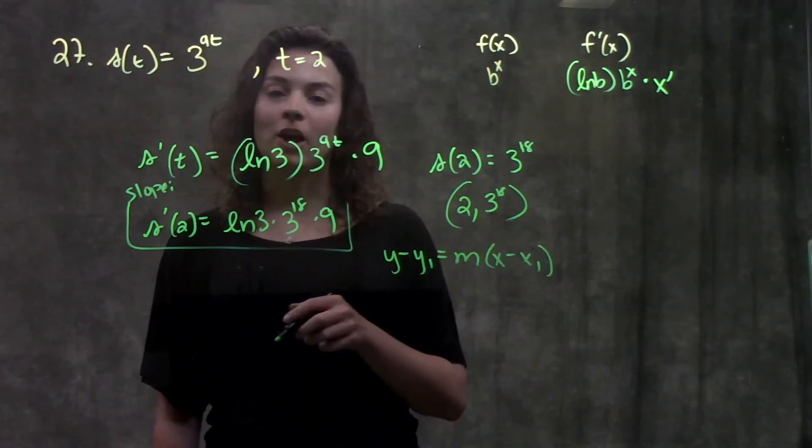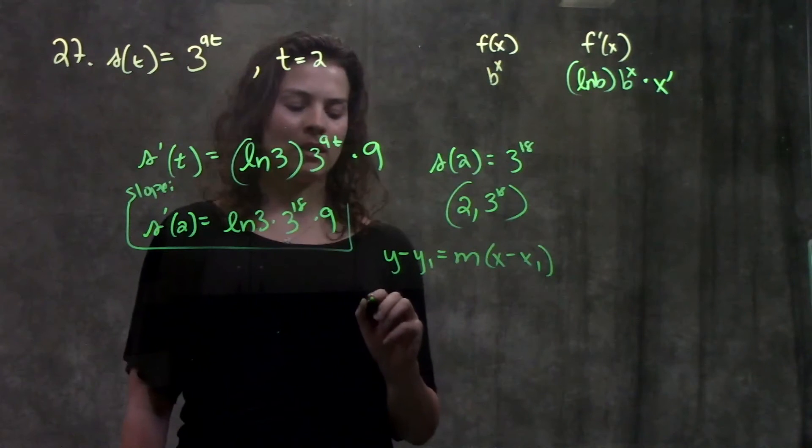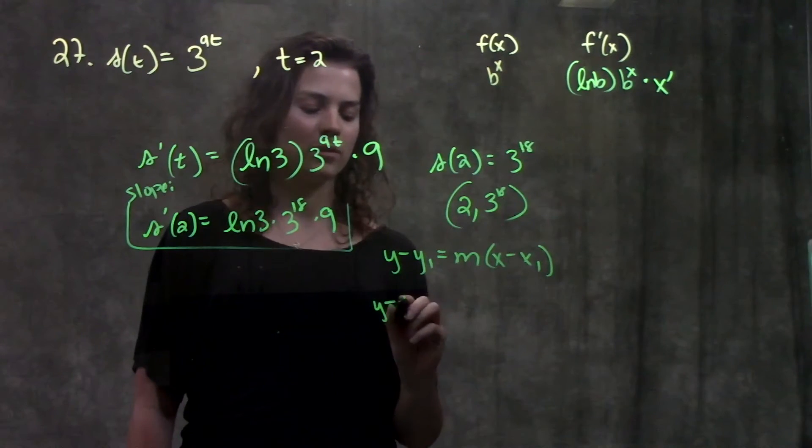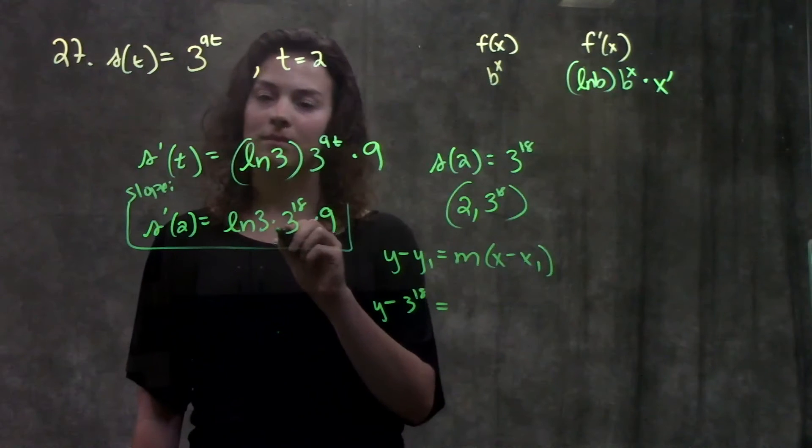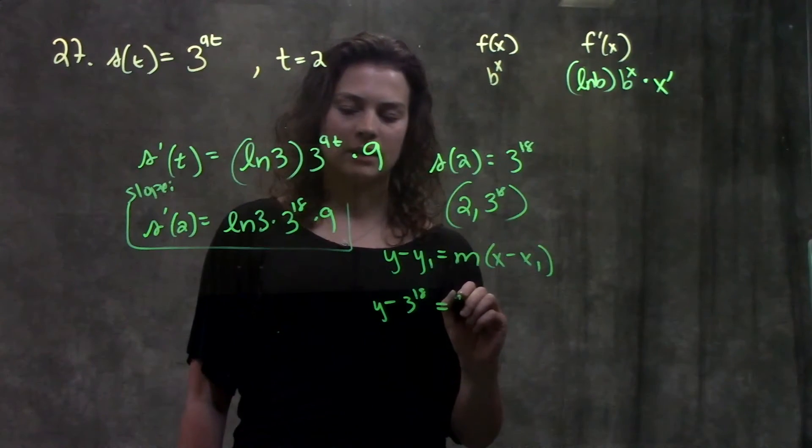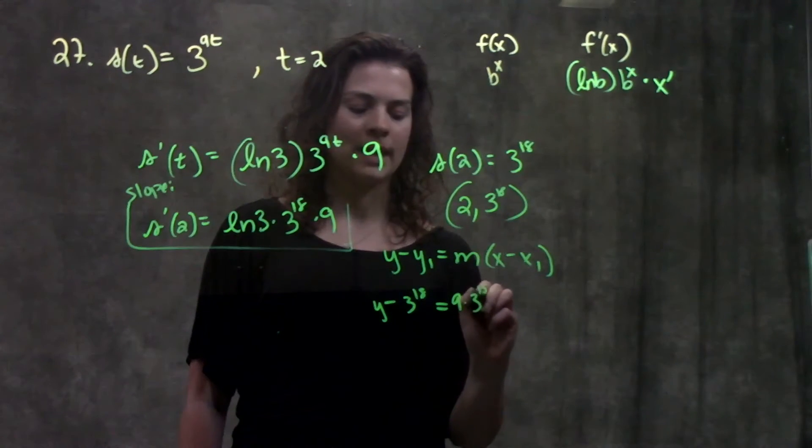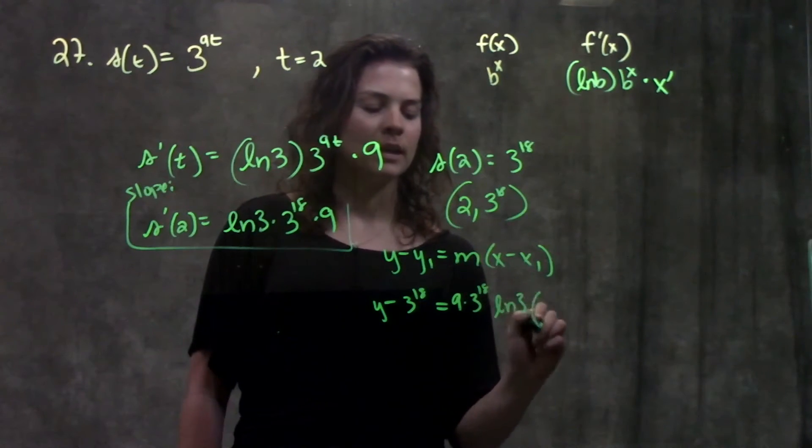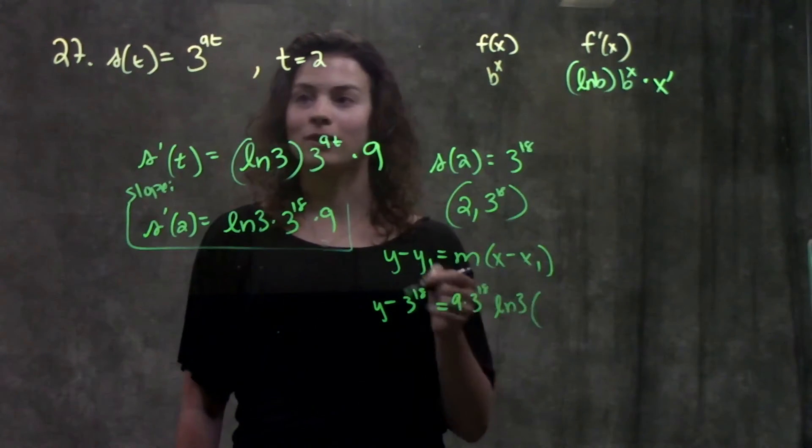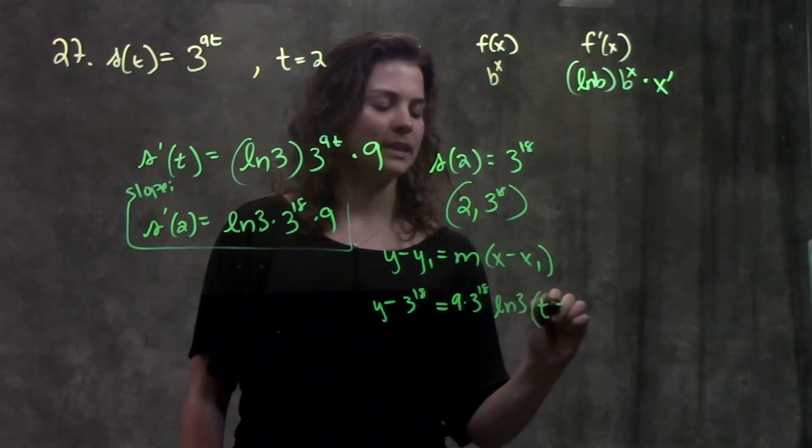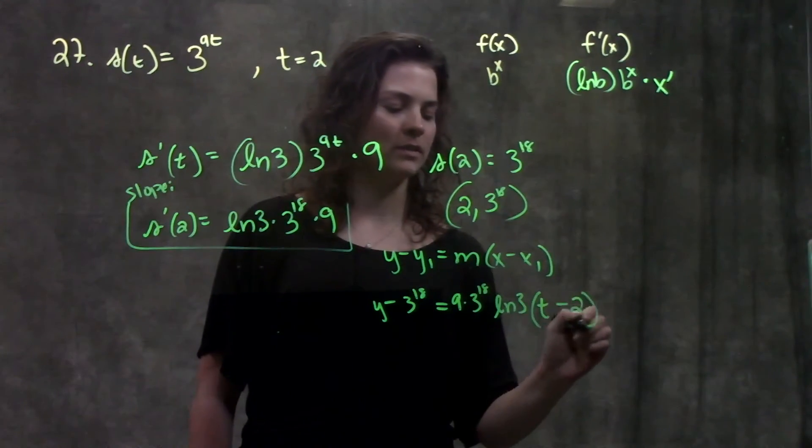I'll plug in all my values. On the left, I get y minus y1, which is 3 to the 18, equals m, my slope, which is 9 times 3 to the 18 times ln(3), times x minus x1, or in this case t, times t minus my t1, which is 2.